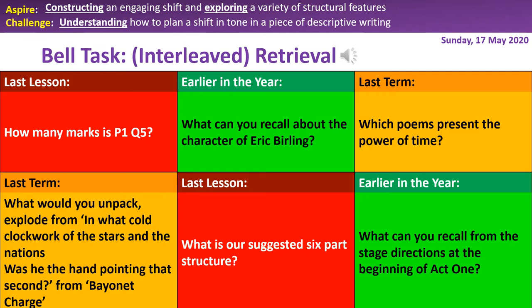Welcome back. We'll start with the questions from last lesson. How many marks is Paper 1 Question 5 worth? It's worth 40 marks — 50% of Paper 1 and 25% of your overall GCSE for English Language, so it's a really high tariff question. Our suggested six-part structure is: paragraph one, an overview of the setting; paragraph two, a description focused on a key object; paragraph three, introduce and describe our character — if there's no character in the image, we can drop one in; paragraph four, a shift in focus, time or mood; paragraph five, the impact and aftermath of that shift; and paragraph six, return to the overview with a circular structure.